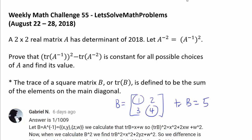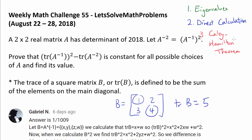I'm going to answer this question in three different ways. The first method uses eigenvalues and the eigenvalues' relationship with trace and determinant. The second method is going to use some direct calculation with A inverse. And the final method is going to use the Cayley-Hamilton theorem, which can be applied to many more problems involving trace and determinant.